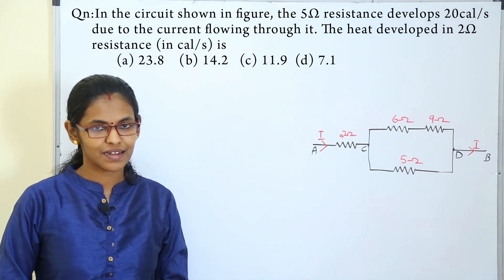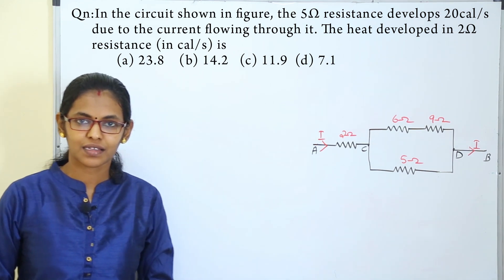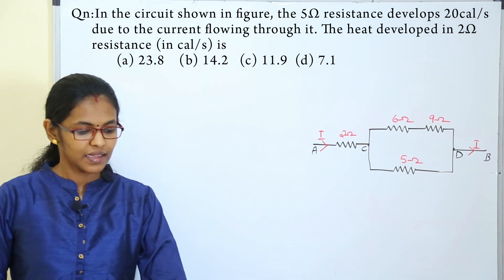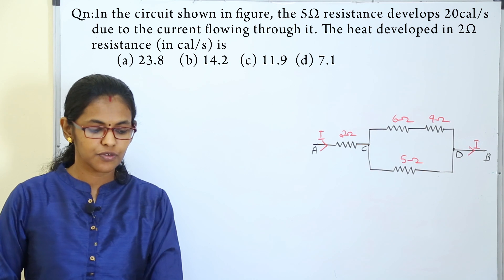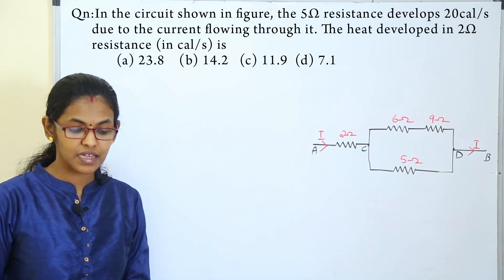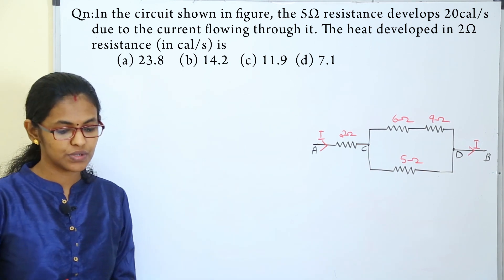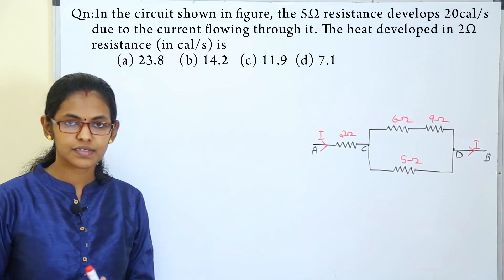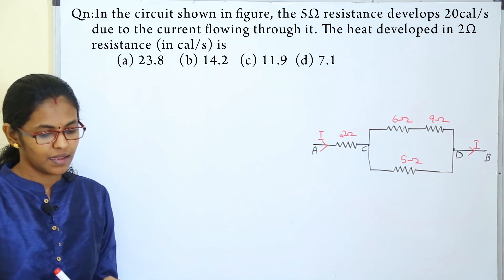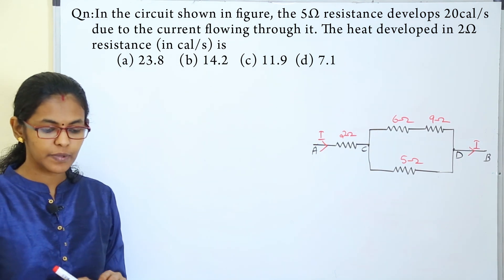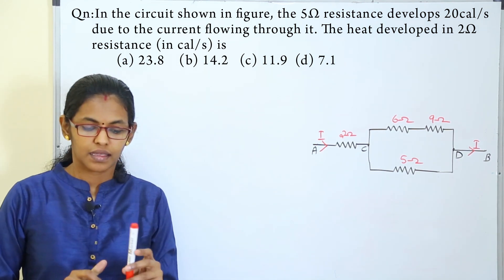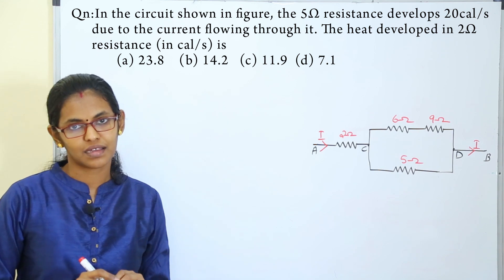Hello everyone. Welcome to the Doubt Clearing section. In this circuit shown in the figure, the 5 ohm resistance develops 20 calories per second due to the current flowing through it. Find the heat developed in the 2 ohm resistance in calories per second.